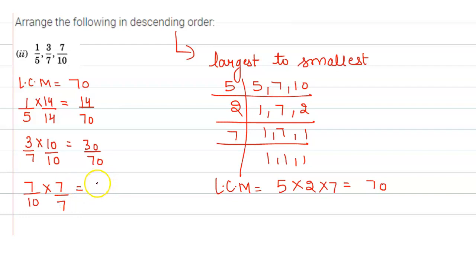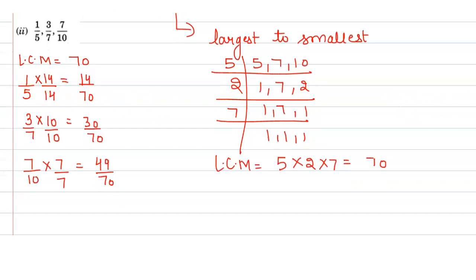So let us arrange these fractions into descending order. So the largest one will be 49 by 70, then we have 30 by 70, and the smallest one will be 14 by 70.